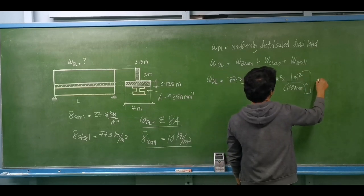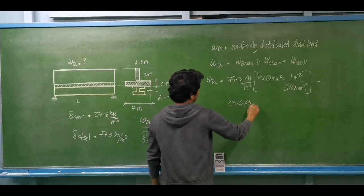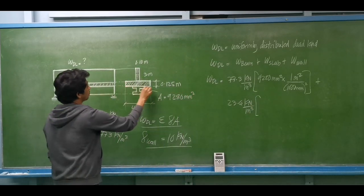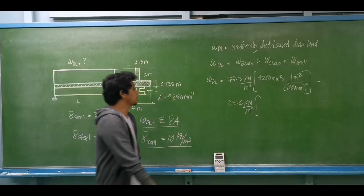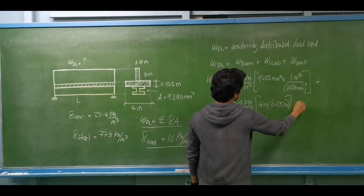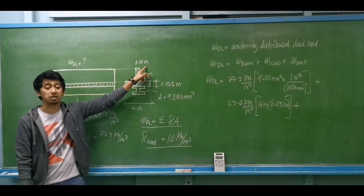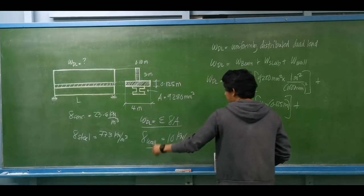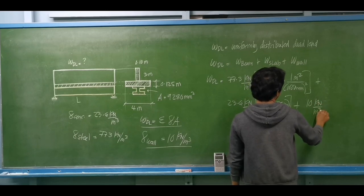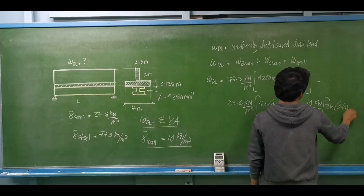For the concrete slab: unit weight 23.6 kilonewtons per cubic meter, with a tributary width of 4 meters and thickness of 0.125 meters, giving a cross-sectional area of 4 m × 0.125 m. Then for the wall: it is 3 meters high with a thickness of 0.10 meter, with unit weight 10 kilonewtons per cubic meter and cross-sectional area 3 m × 0.10 m.